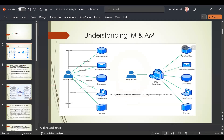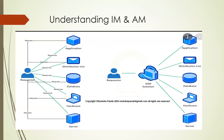In IAM tools, there are requestors who want to access certain things — maybe an application, a distribution list, a database, certain hardware, or a server. When it comes to any organization's applications, they have certain restrictions. A person working in accounts shouldn't have access to all databases; a developer shouldn't have unrestricted database access; but a CFO might need access to all data points required for their department. So we have a kind of compartmentalization within our organization, and we give access to subsequent persons with their access rights set up.